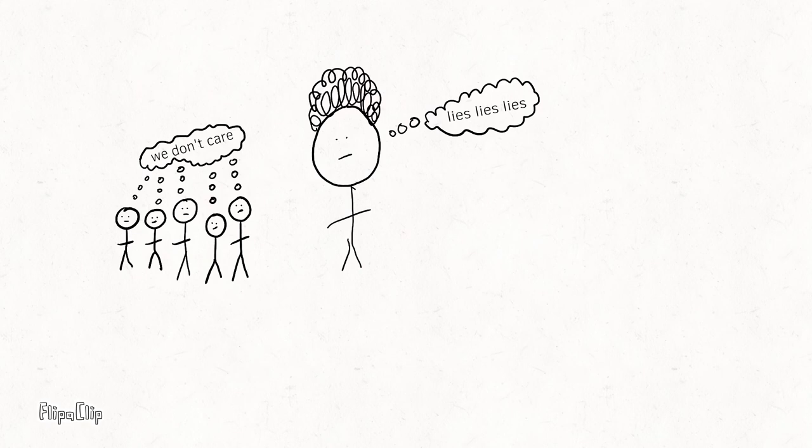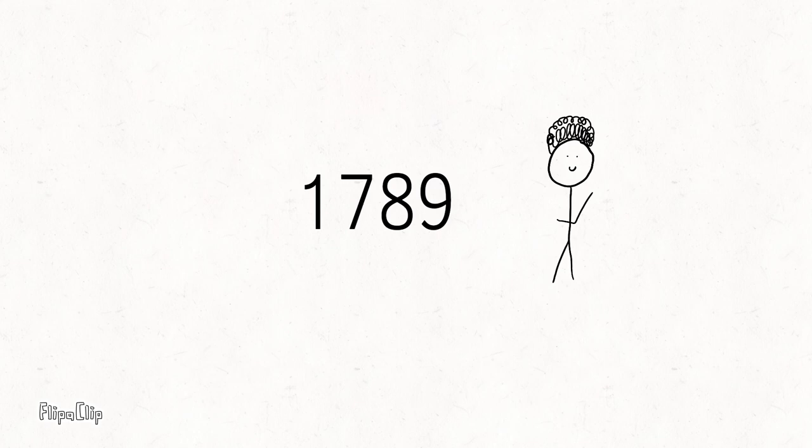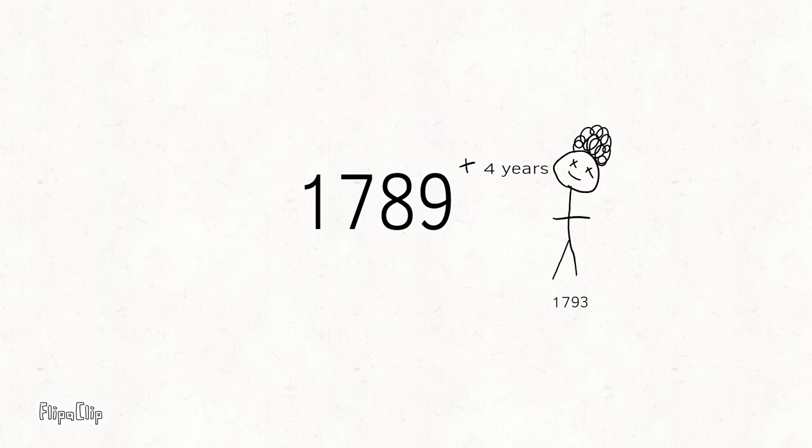Though the revolution was in 1789, Marie Antoinette was not executed until four years later in 1793. The renowned wax artist Marie Tussaud made a death mask of Antoinette's face after her execution.